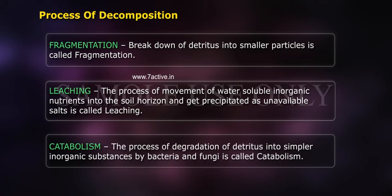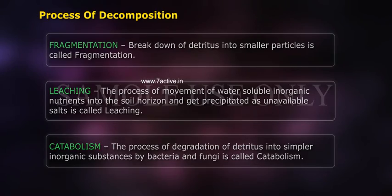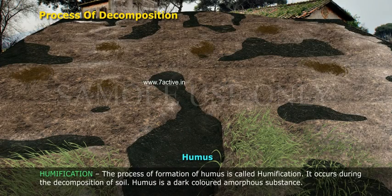Catabolism is the process of degradation of detritus into simpler inorganic substances by bacteria and fungi. Humification is the process of formation of humus.